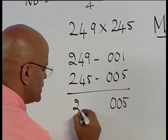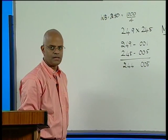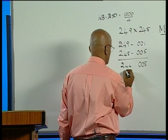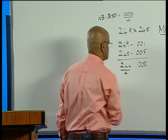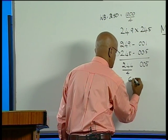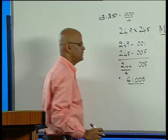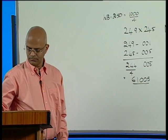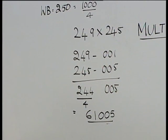Subtract it through, you get 244. Is that clear? Now what you want to do is it is 1000 divided by 4. Therefore, you divide this by 4. Therefore, you get 61005 as the required product.